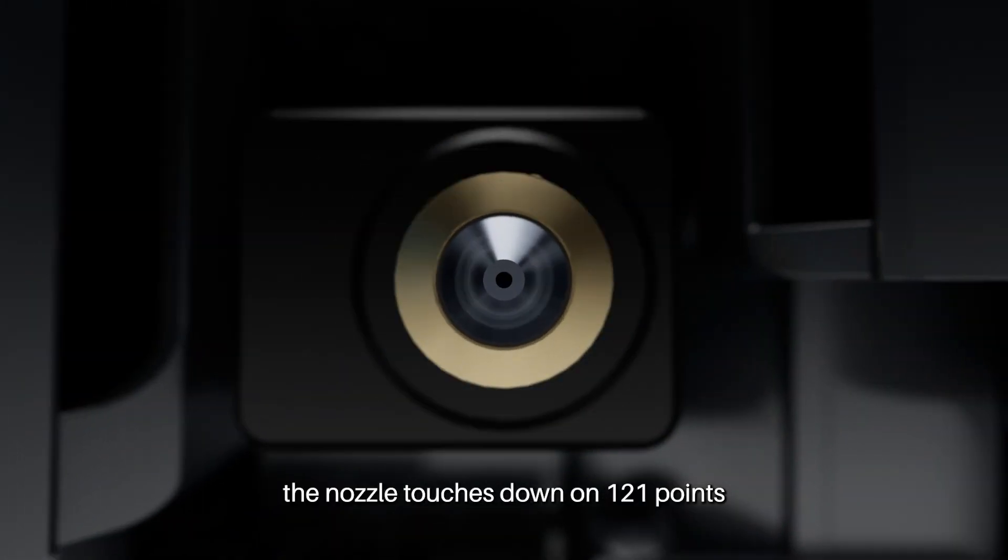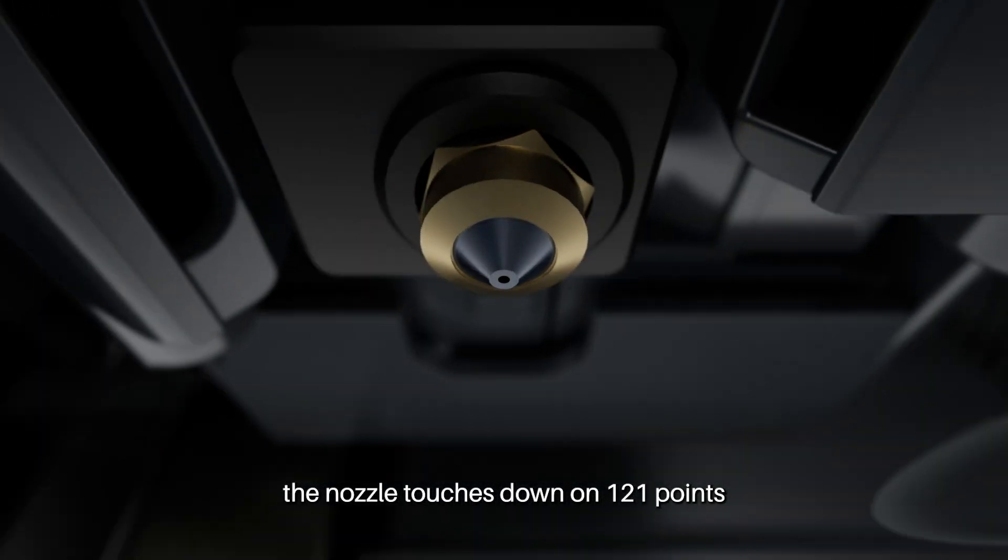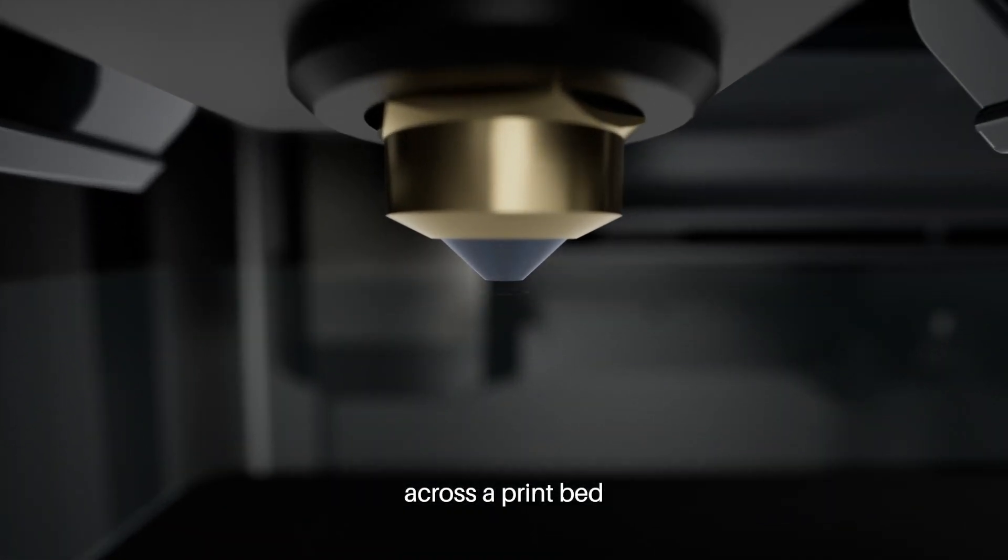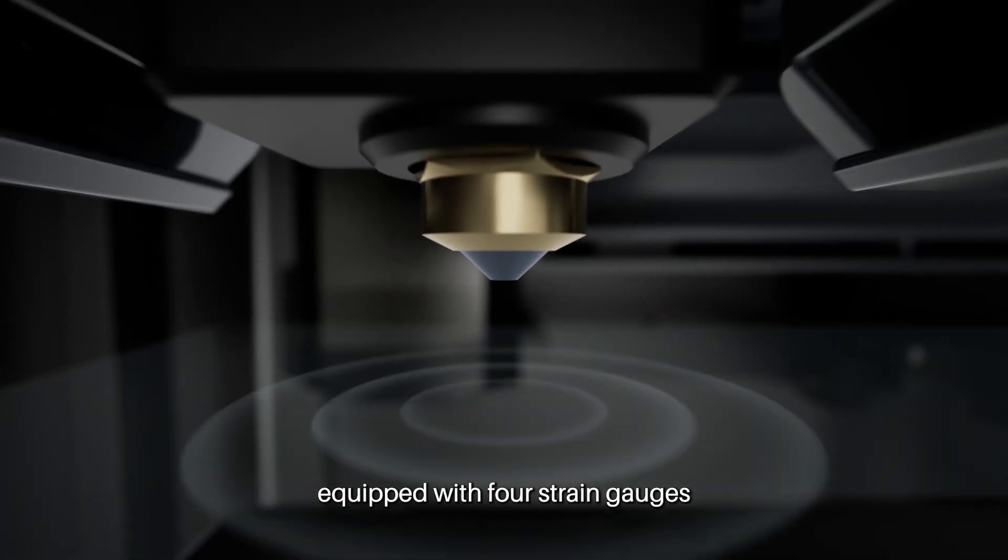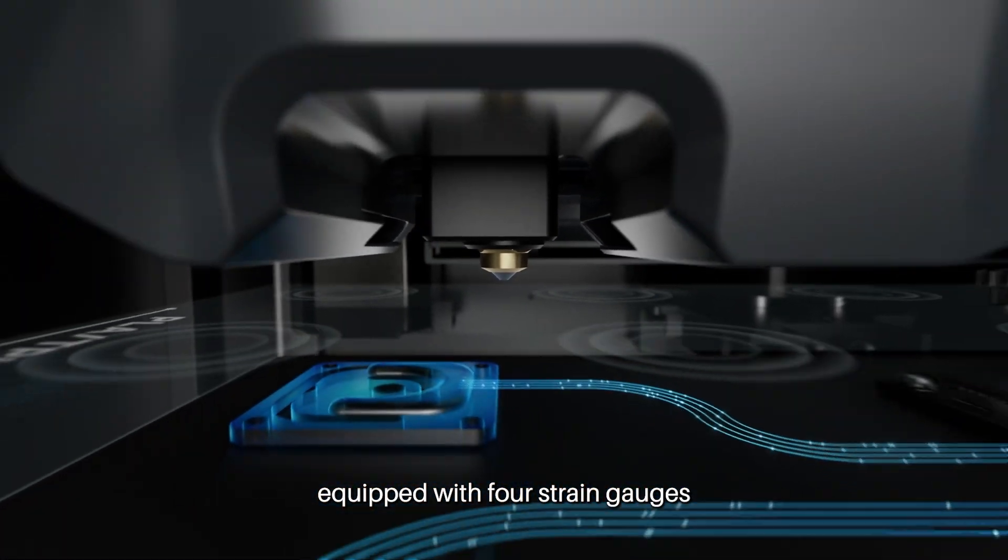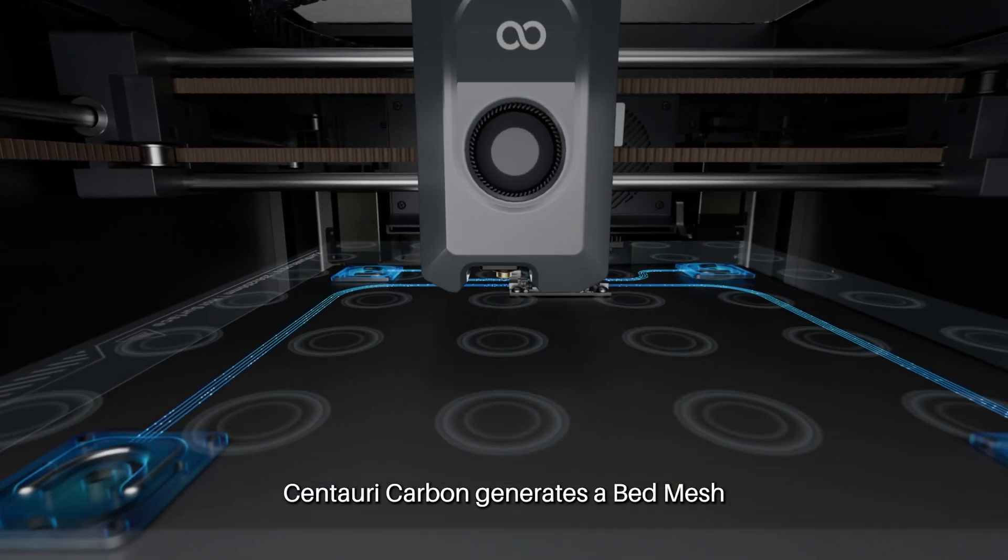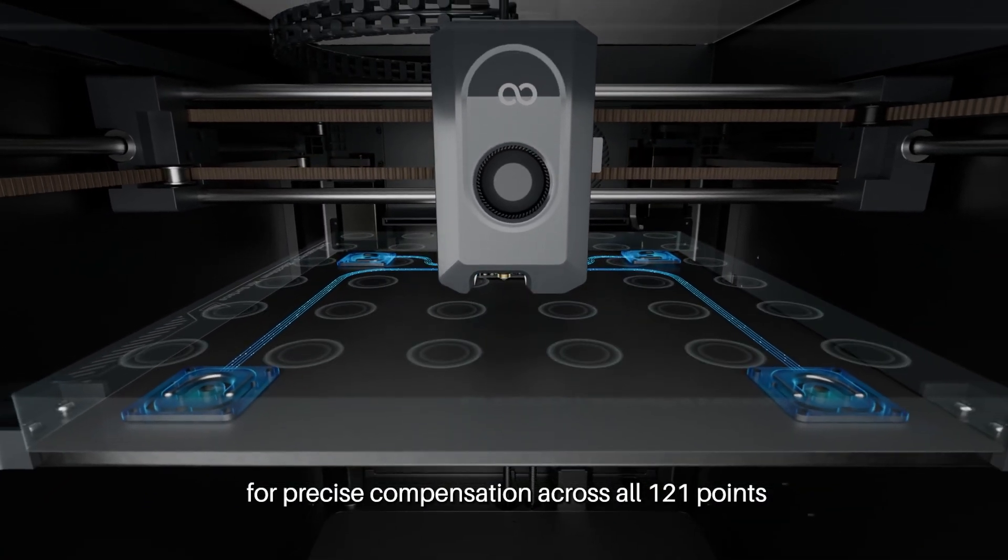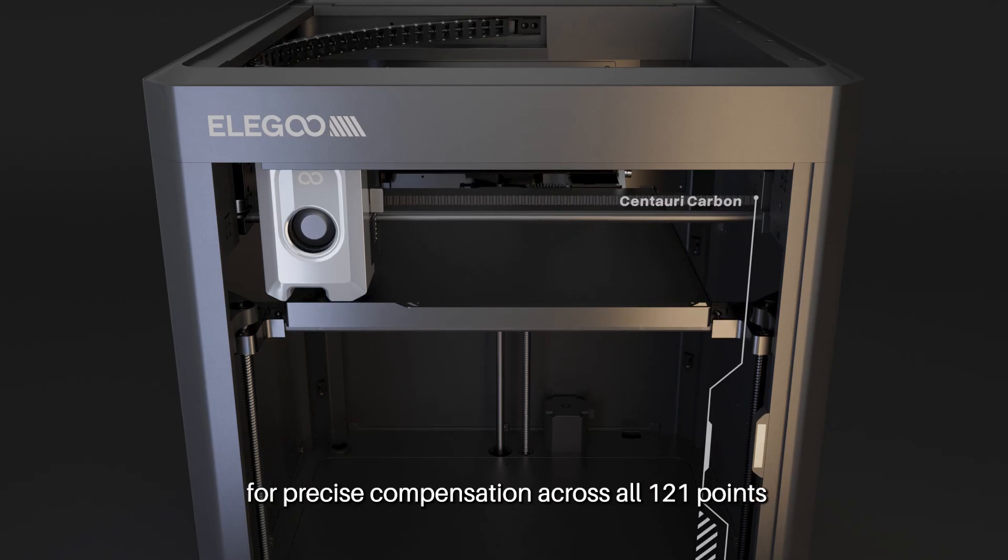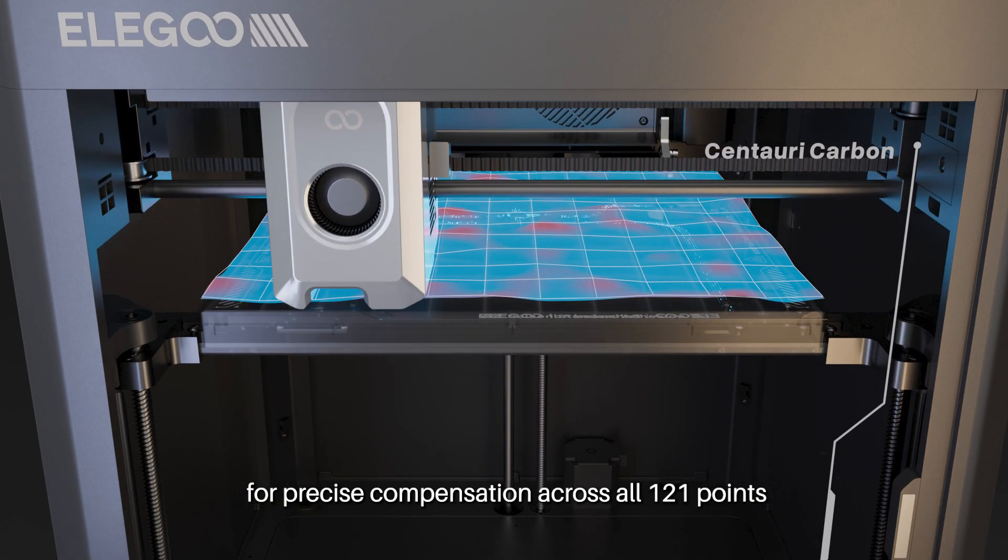During the process, the nozzle touches down on 121 points across a print bed equipped with four string gates. Using the results, Centauri Carbon generates a bed mesh for precise compensation across all 121 points.